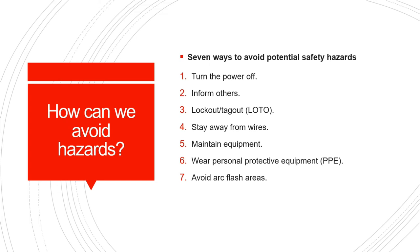How can we avoid hazards? Seven ways to avoid potential safety hazards: turn the power off and inform others; lock out or tag out; stay away from waste; maintain equipment; wear personal protective equipment; and avoid arc flash areas.